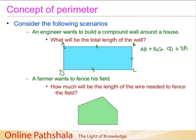So when he goes around the periphery of the house, what he gets is the length of the wall. This was one scenario. Another scenario is that there is a farmer who wants to fence his field. This is a very common thing — farmers need to fence their field so that cattle may not come in and graze the crop away.